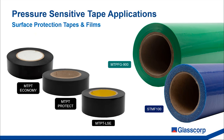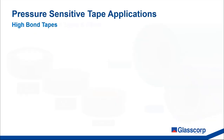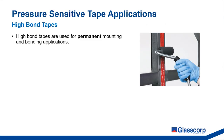High bond tapes are used for permanent mounting and bonding applications. The high bond tapes we'll discuss in this section are all double-sided tapes — sometimes referred to just as double-sided tapes. However, it's important to make the distinction: just because a tape is double-sided does not necessarily mean that it's suitable for bonding applications.